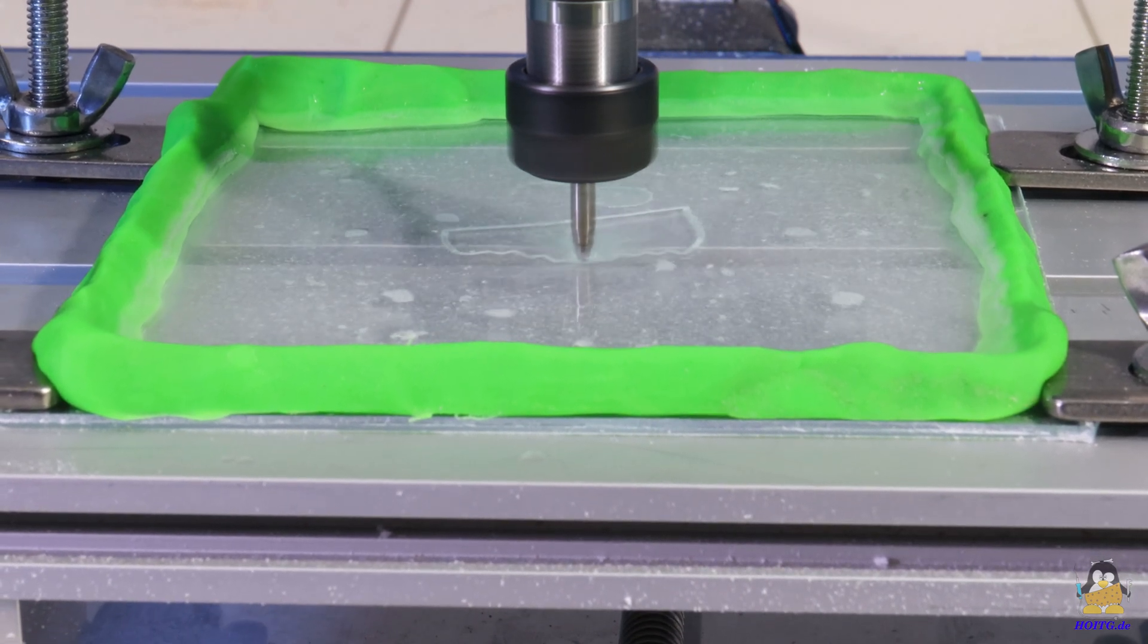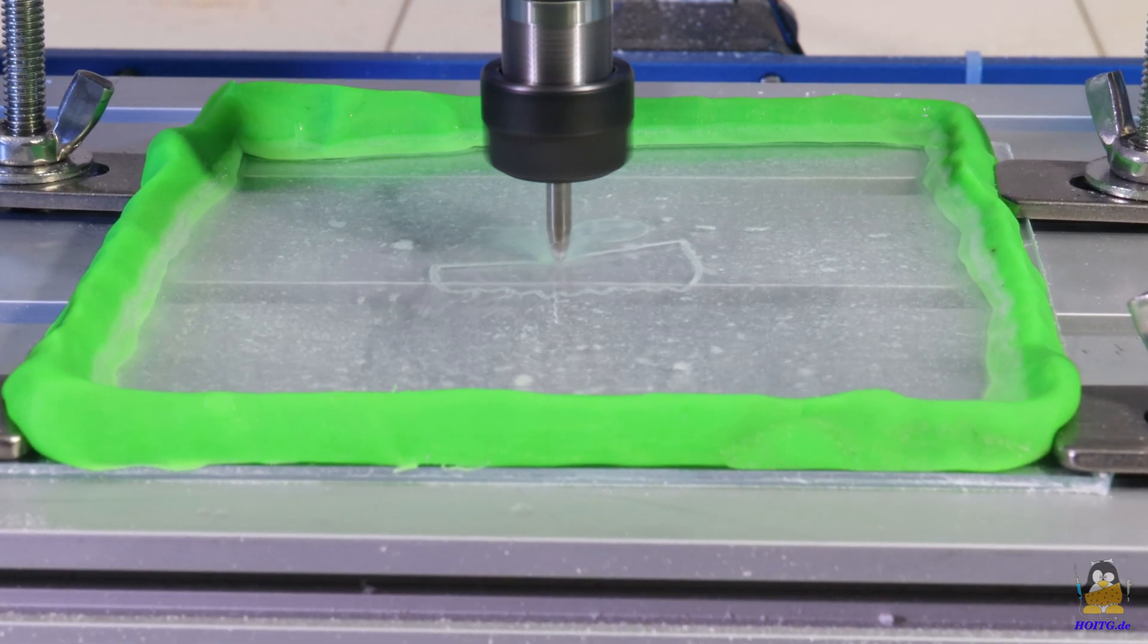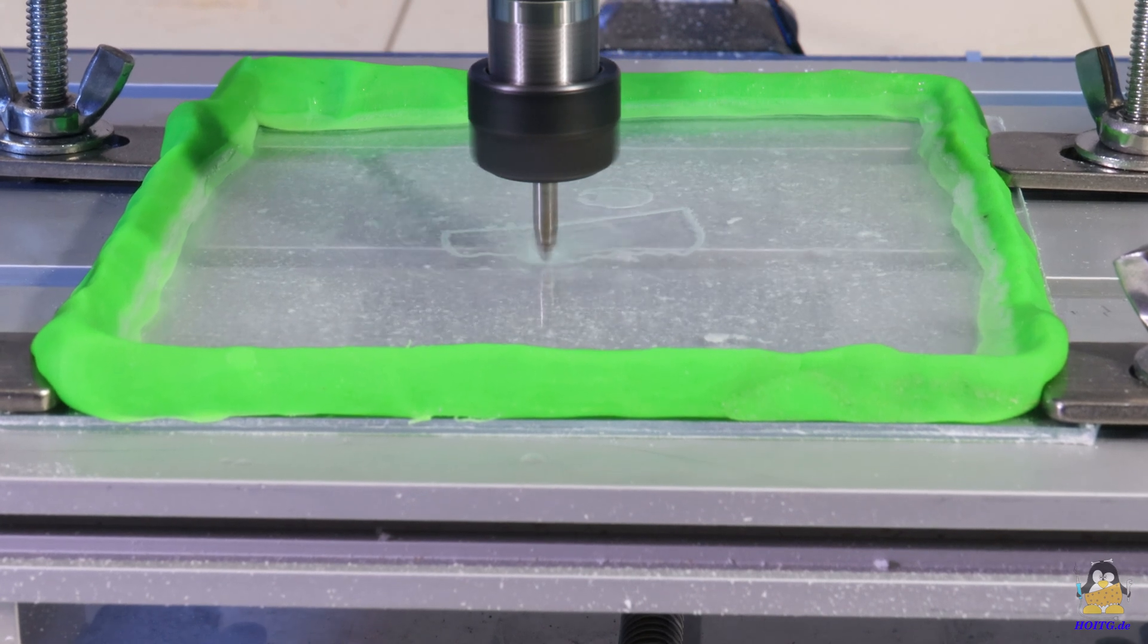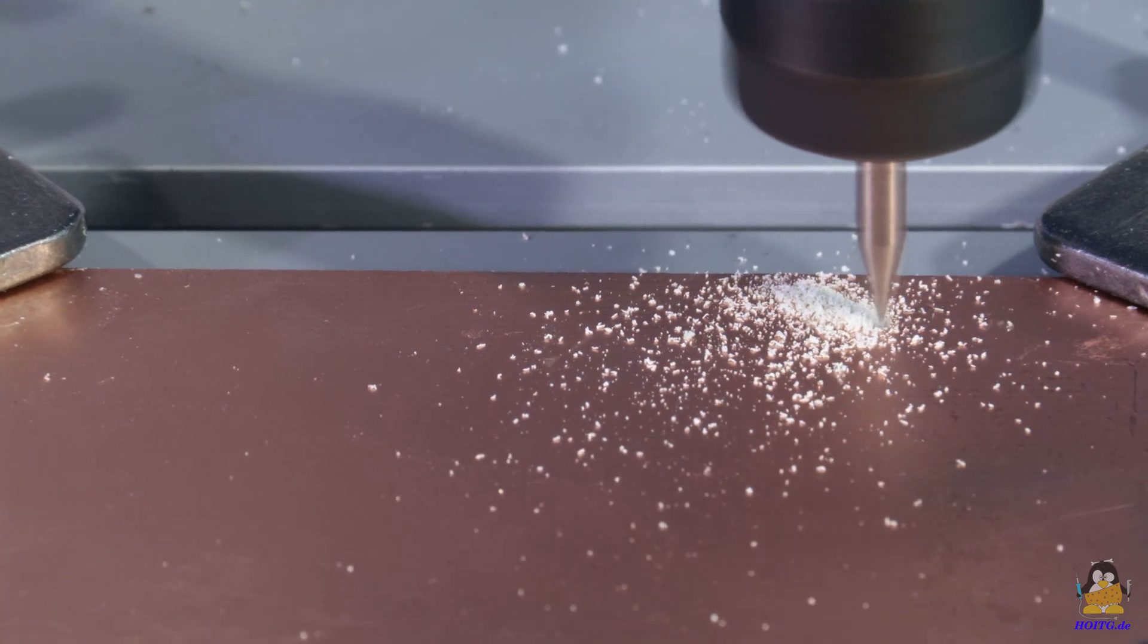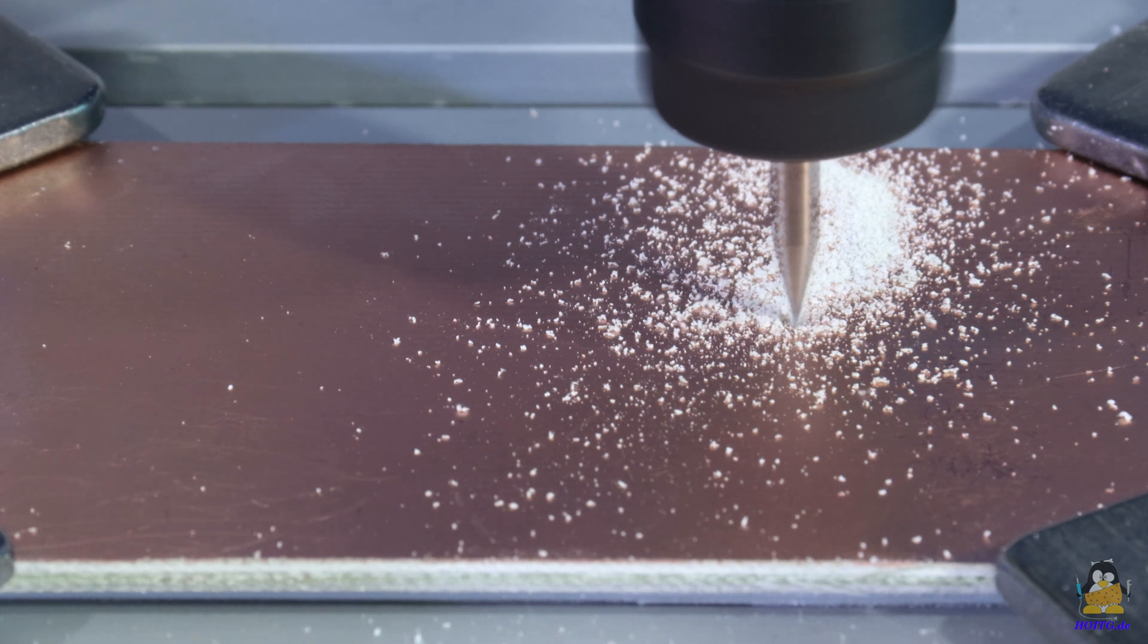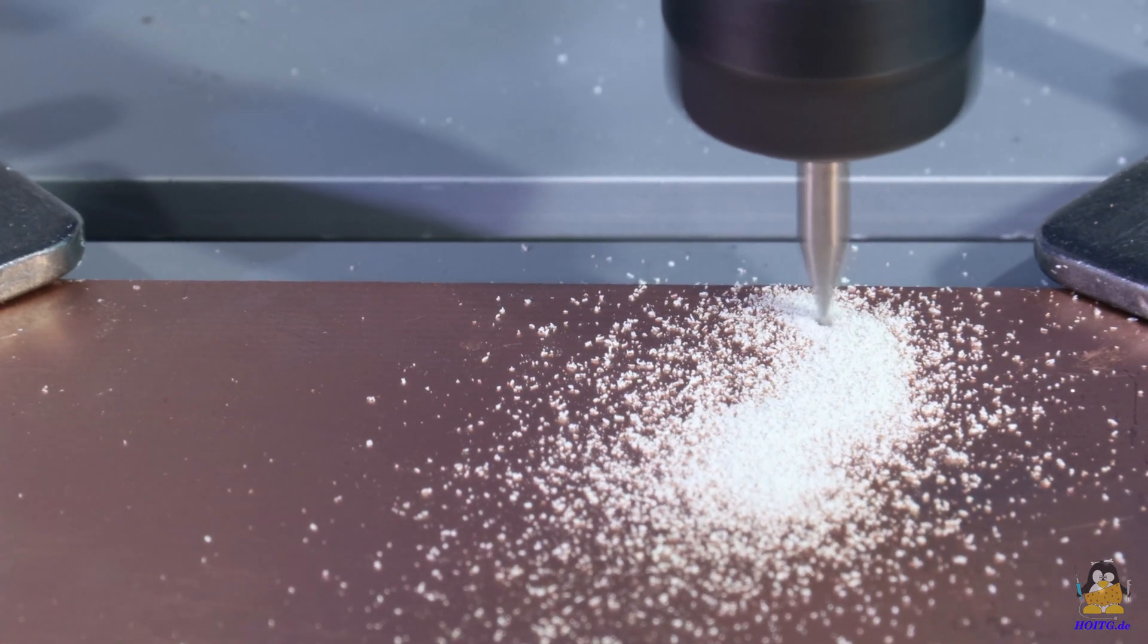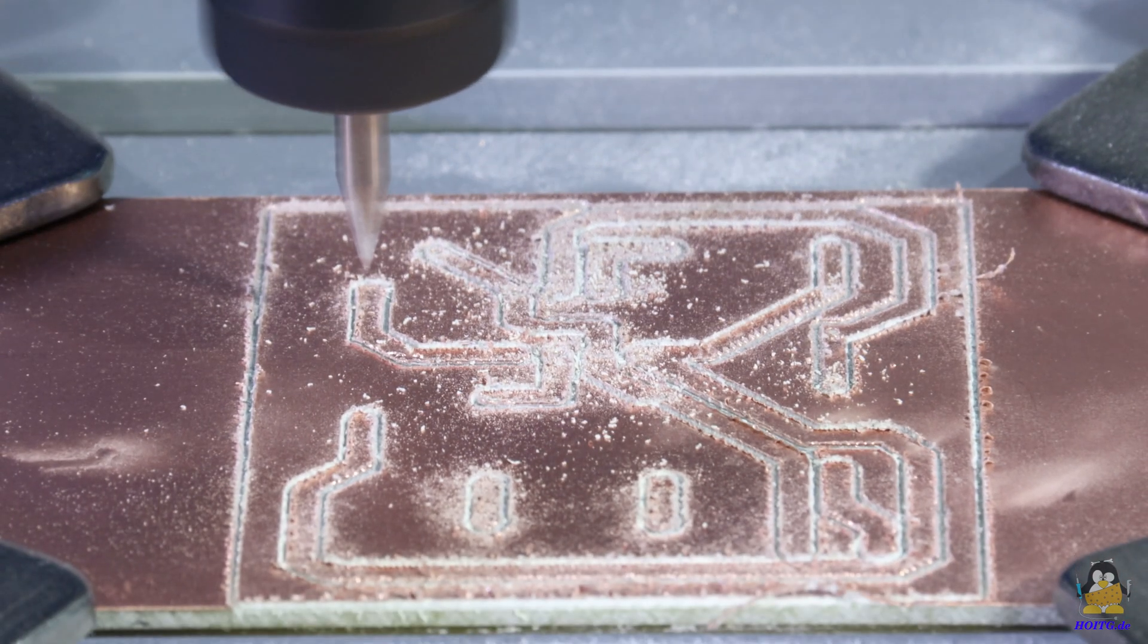Now the results can be seen in high resolution photos on the website. One of the 30 degree V-bits is used for this. The depth of engraving is about 0.2mm. In the second pass, the holes are pre-drilled with the V-bit.